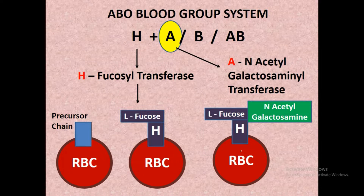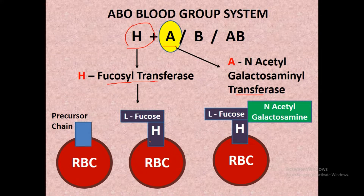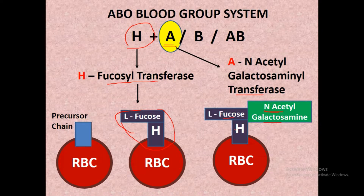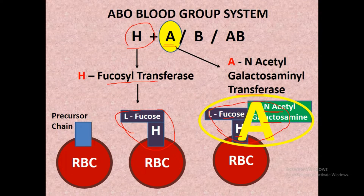The person who has gene A, which encodes N-acetylgalactosamine transferase enzyme — as mentioned, the H gene must first encode Fucosyltransferase enzyme, which transfers L-fucose to the precursor chain, forming H substance. Then the gene A encodes N-acetylgalactosamine transferase, which transfers N-acetylgalactosamine to this H substance. So N-acetylgalactosamine plus L-fucose plus precursor chain collectively form antigen A.